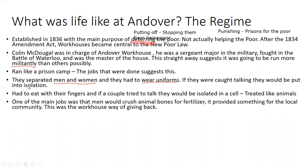One of the main jobs at Andover workhouse was crushing animal bones for fertilizer. Colin McDougall and his wife believed this was a way for Andover to give back to the community and possibly make a slight profit. The boards of guardians wanted workhouses run as efficiently as possible. The less a workhouse cost, the less it would cost the ratepayers — seen as a positive, but it came at the detriment of the people inside.